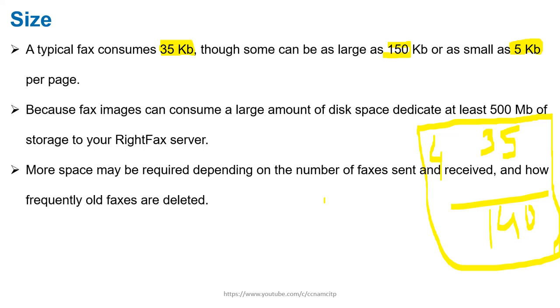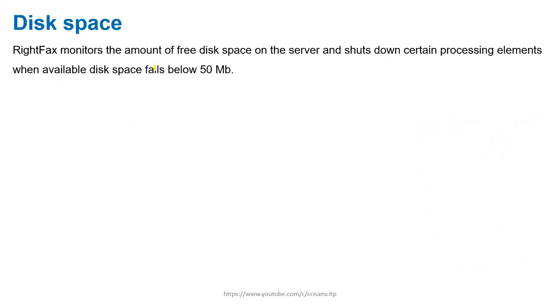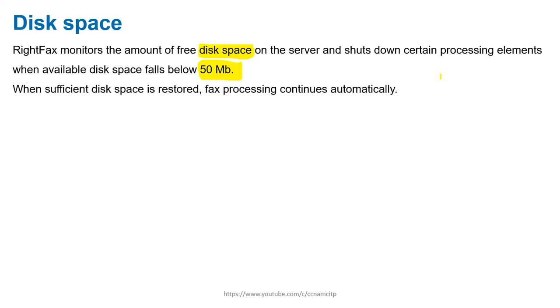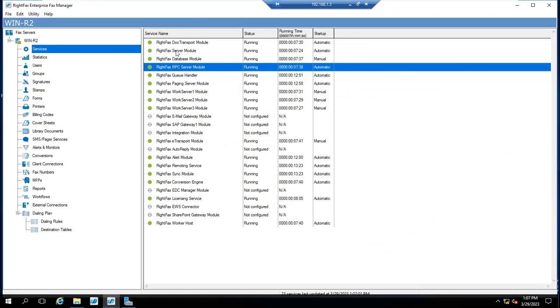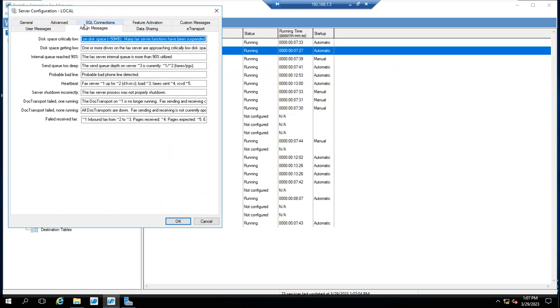RightFax monitors the amount of free space on the server and shuts down certain processing elements when available disk space is below 50 MB. You can consider it an automatic monitoring mechanism that keeps monitoring disk space. If disk space goes below 50 MB, the RightFax server will stop certain processing. You can also configure alerts using the server module under Admin Messages.